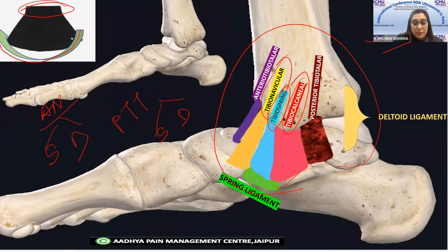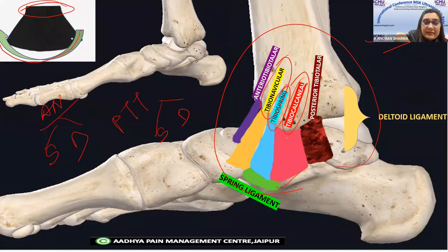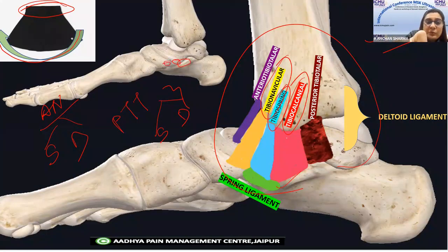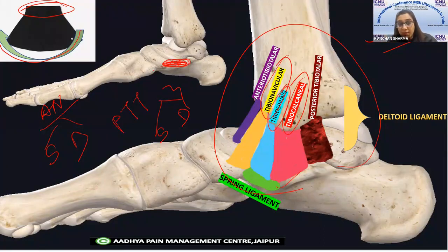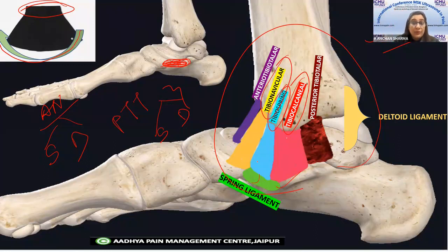You have the sustentaculum tali, then the talus, and then the navicular bone. The spring ligament bridges these three bones together and helps maintain the medial longitudinal arch. There is a ligament from the tibia that goes not to a bone but to another ligament — the tibio-spring ligament — and then from the tibia there is also a connection going to the navicular bone. All these are in the superficial layer.